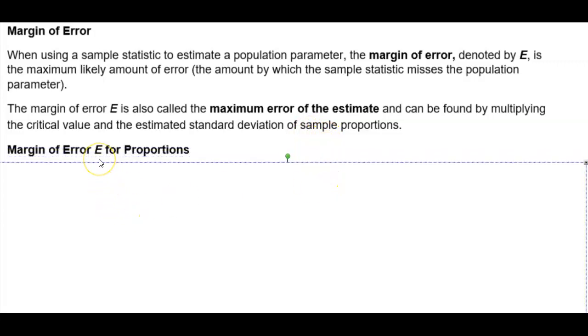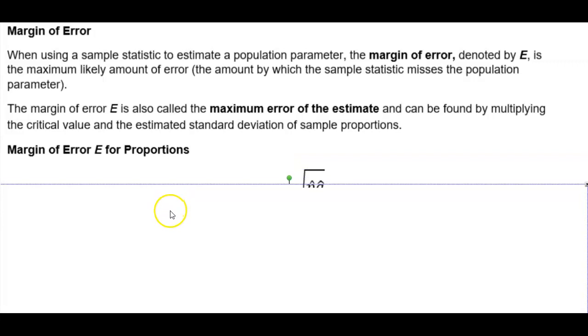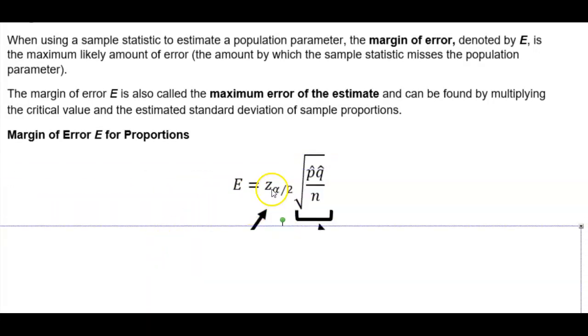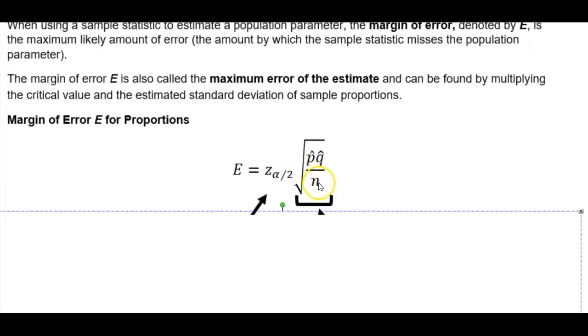The margin of error for proportions: the margin of error is equal to the critical value of Z alpha divided by 2 times the square root of the point estimate times the complement of the point estimate Q divided by n.